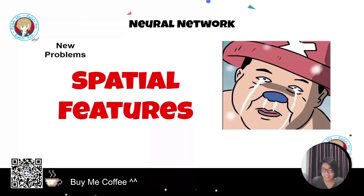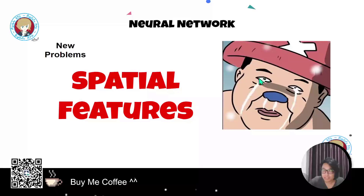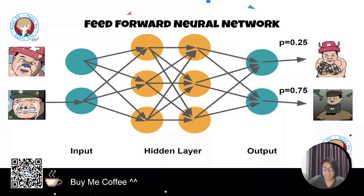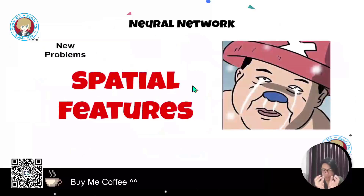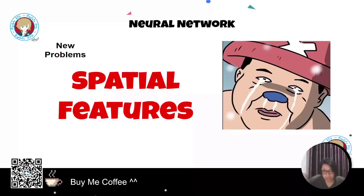A new problem arose: what if we want to train image data? Image data is very special — if we want the network to understand eyes, nose, or head in an image, the feedforward neural network has to flatten all the data before feeding it in. This architecture cannot capture local features or understand spatial features that are combined together.